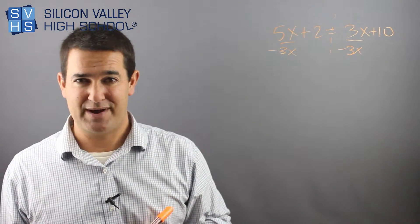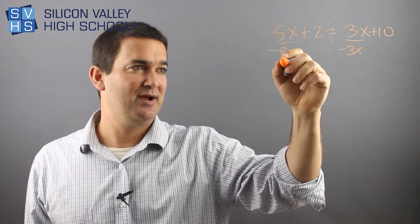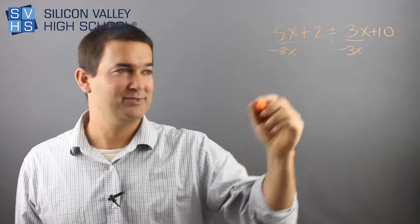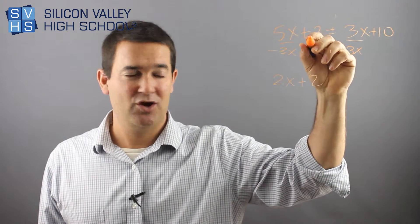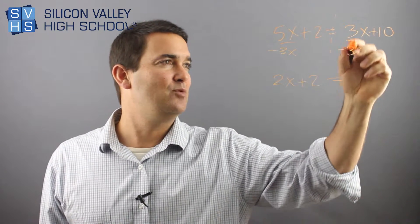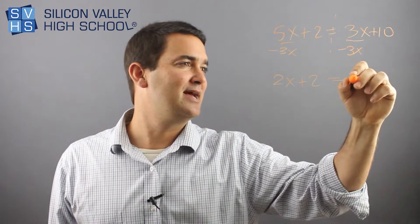Again, it's kind of like a little border barrier. So 5x minus 3x, I can do because they're like terms. I get 2x plus 2, nothing happened to him, he didn't go away, so he just carries down. Equals, now this is gone, which was the point, equals 10.